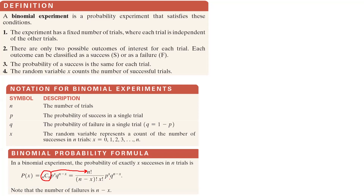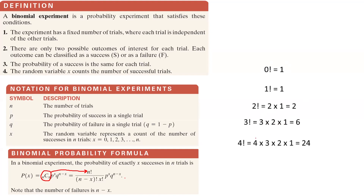But what is a factorial? In math, 0 factorial by convention equals 1. 1 factorial equals 1. 2 factorial is 2 times 1, which equals 2. 3 factorial is 3 times 2 times 1, which equals 6. 4 factorial is 4 times 3 times 2 times 1, which equals 24.